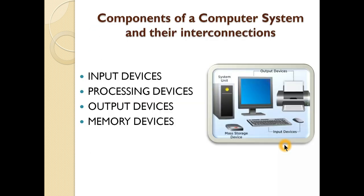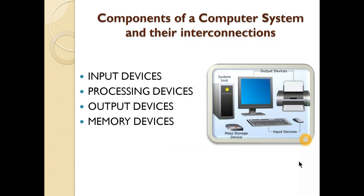Now, components of a computer system. All components are divided into four main categories: input devices — through which we give input to the computer; processing devices — through which processing is done; output devices — through which we get the output; and memory devices — which save the data in the computer. These four categories are the main components of a computer system.